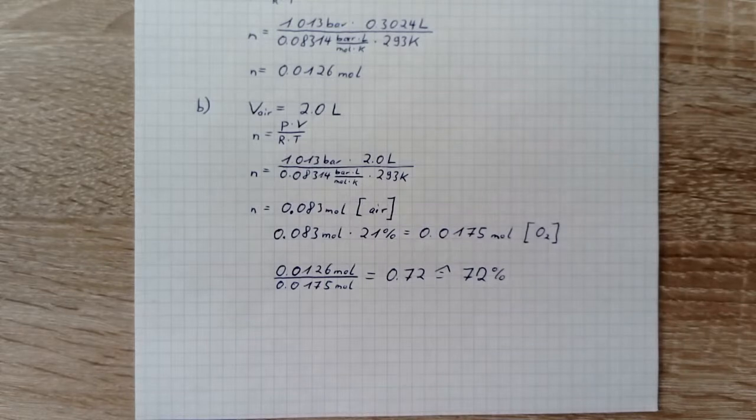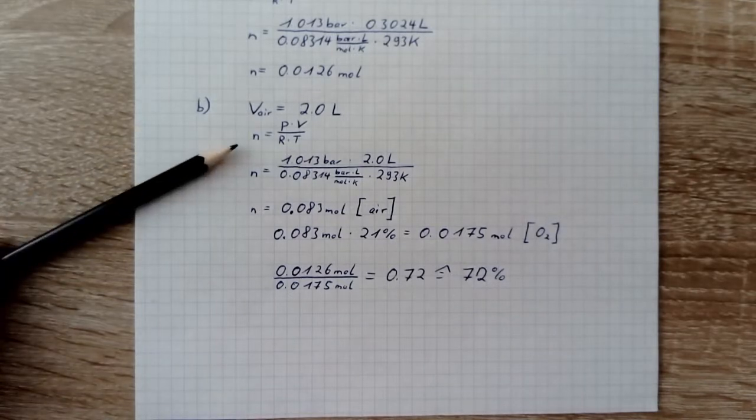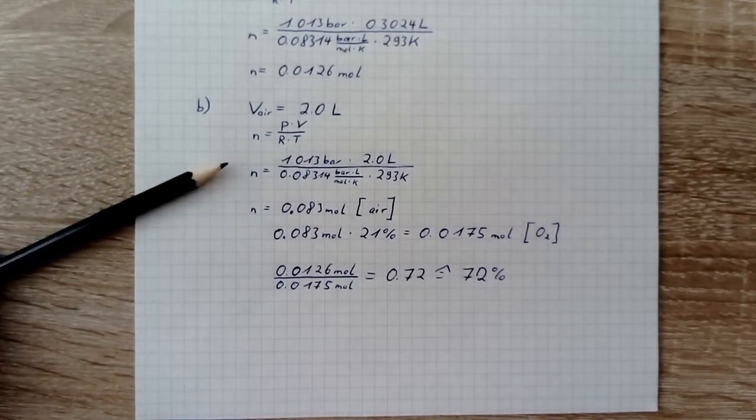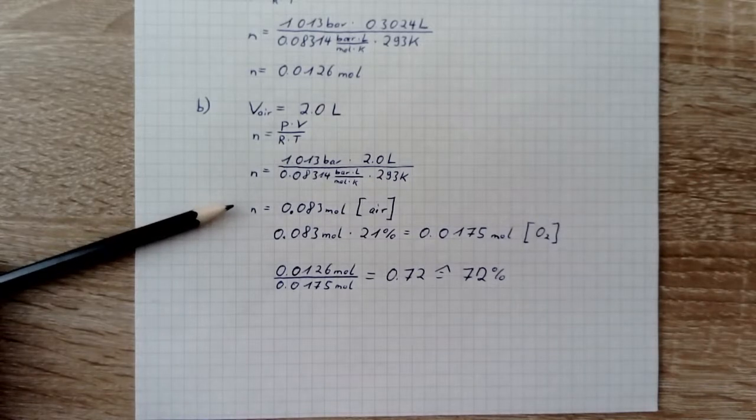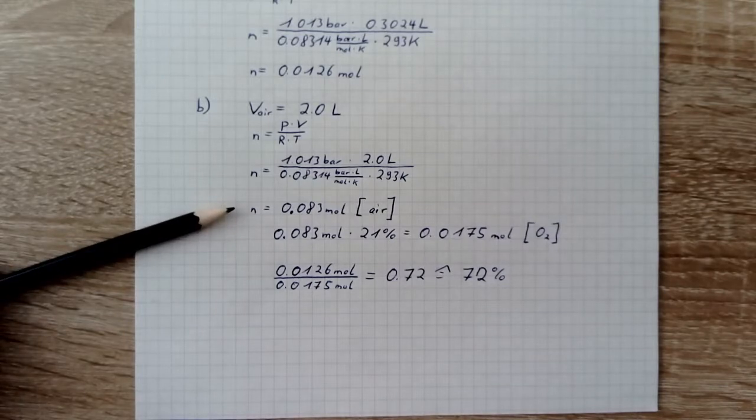We need the moles of 2.0 liters of air so we use this formula again. We get 0.083 moles of air but we need the moles of oxygen so we take the moles of air